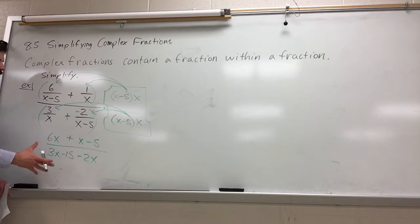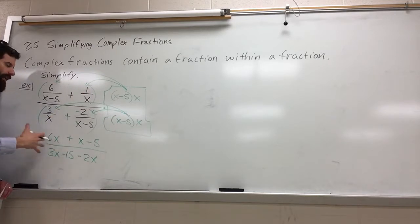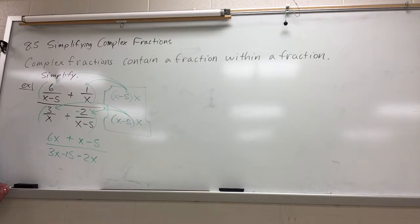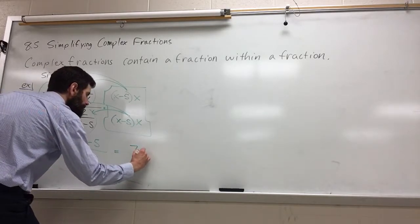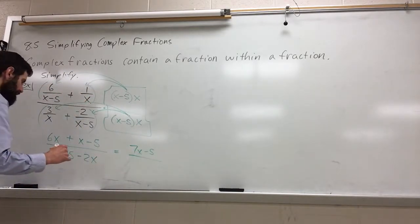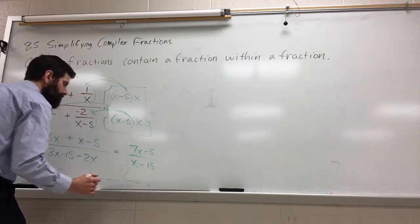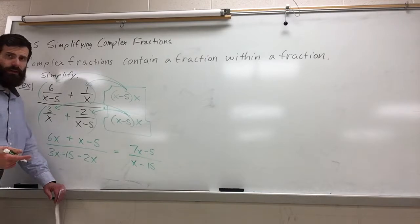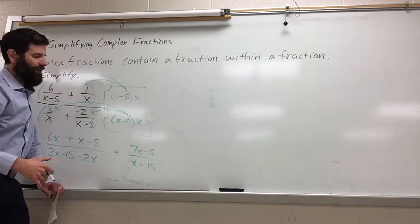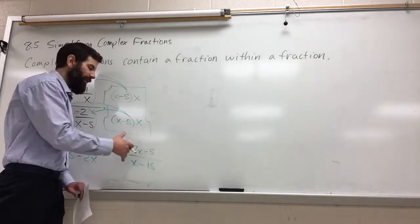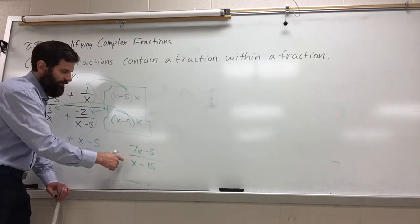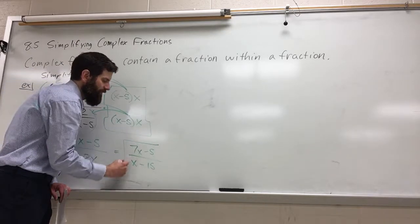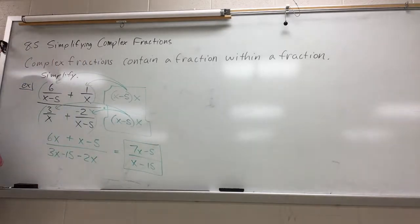From here, notice we multiplied by our common denominator of all the little fractions. Now we've got a non-complex fraction, a normal rational expression. But we do have a little bit of work to do. Let's combine like terms. I do have to warn you, it is possible that at the end of your problem the rational expression might simplify. So double check, does it factor? Nope, nothing factors. So we are good.